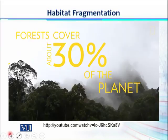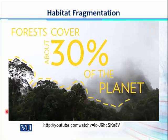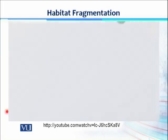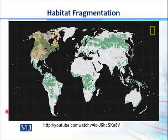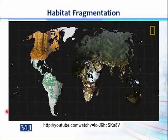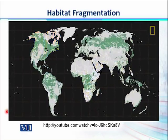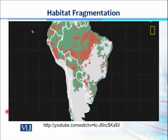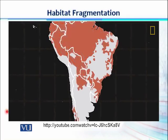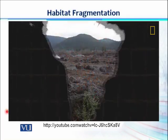In this video, we can see different causes of habitat fragmentation. Forests cover about 30% of the planet, and the ecosystems they create play an essential role in supporting life on Earth. But deforestation is clearing Earth's forests on a massive scale, and at the current rate of destruction, the world's rainforests could completely disappear within 100 years.